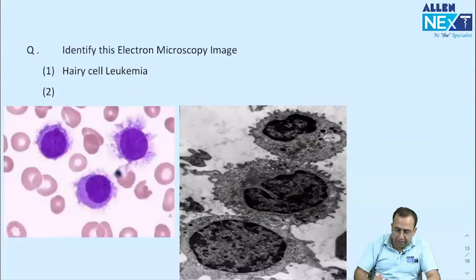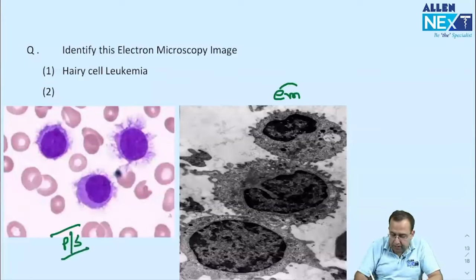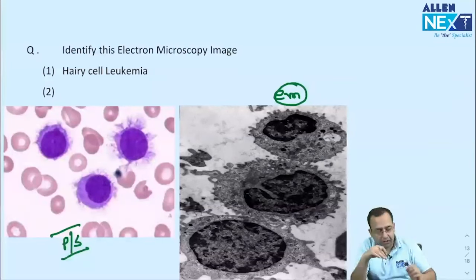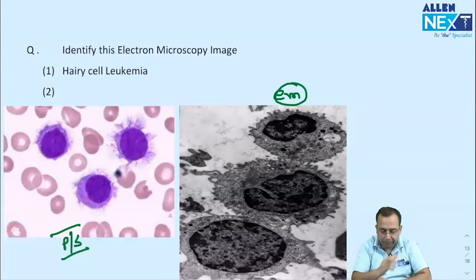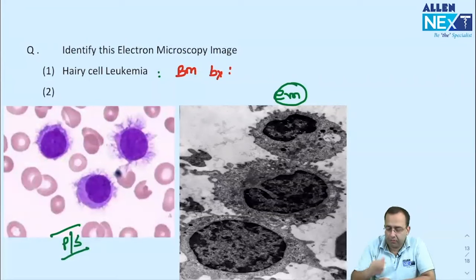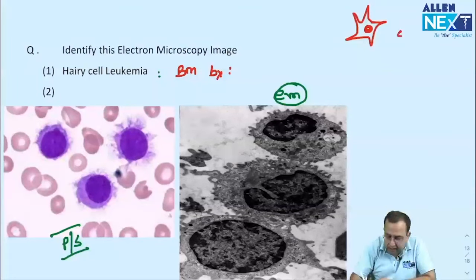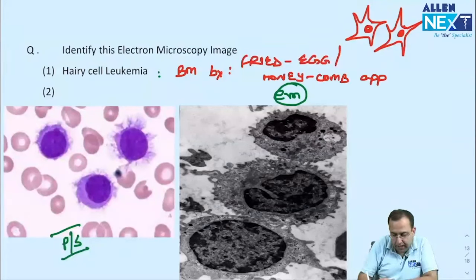An electron microscopic image was shown — it was hairy cell leukemia, showing classic hairy cell projections with no doubt. On bone marrow biopsy, hairy cell leukemia causes a dry tap on aspiration. On biopsy, multiple hairy cells together give a classical fried-egg or honeycomb appearance.